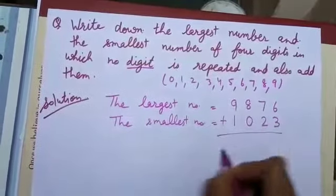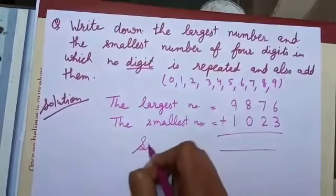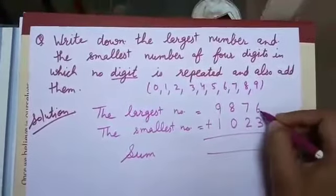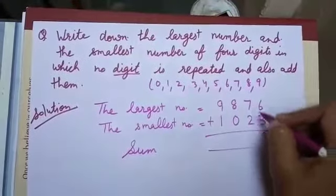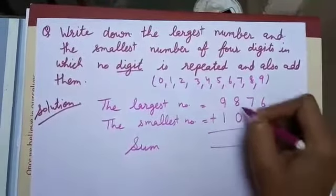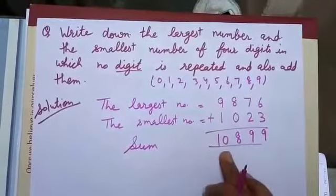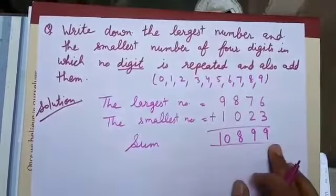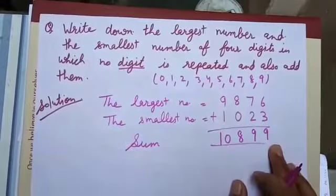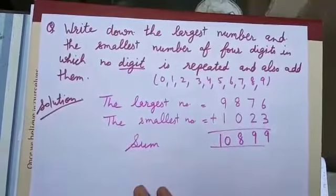Now add them and get the sum. 6 plus 3 is 9. 7 plus 2 is 9. 8 plus 0 is 8. 9 plus 1 is 10. The sum is 10,899. I think the concept is clear to you.